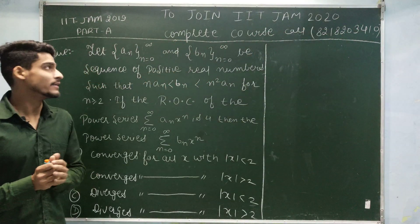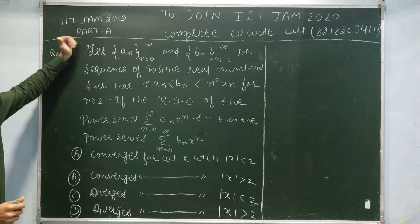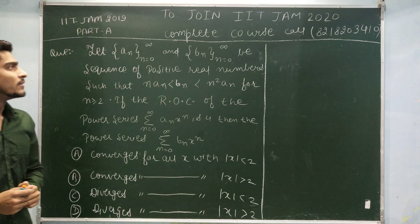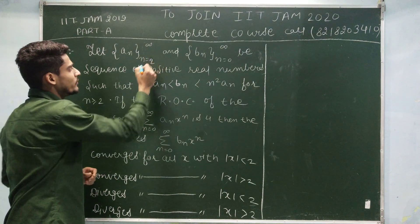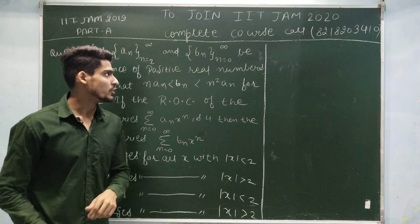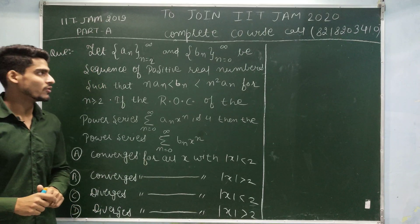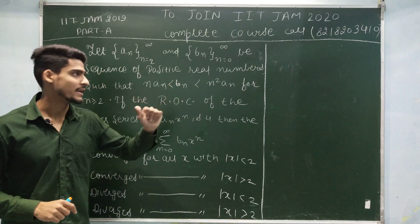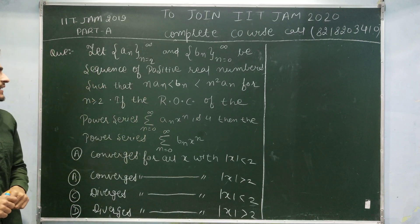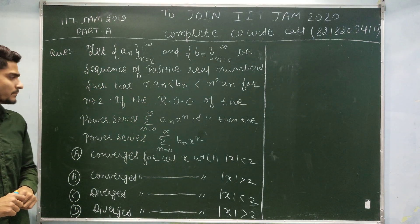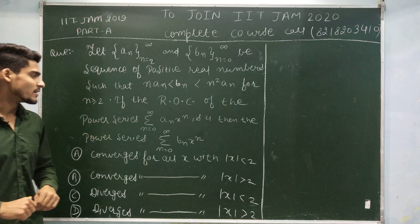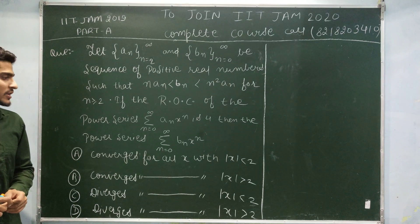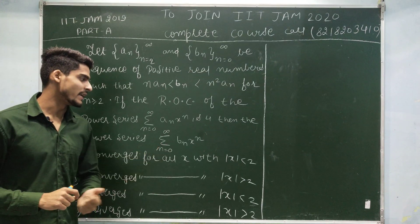Welcome to Mathematical Parts of La. Let us discuss the question of IIT JAN 2019 part A. This question is of one mark. Let aₙ where n runs from 2 to infinity and bₙ where n runs from 0 to infinity be sequences of positive real numbers such that n·aₙ < bₙ < n²·aₙ for n ≥ 2. If the ROC of the power series summation aₙ·xⁿ (n from 0 to infinity) is 4, then find the nature of the power series summation bₙ·xⁿ.